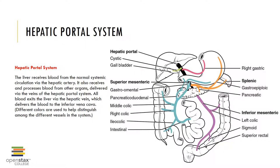Here you can see the hepatic portal system. The liver is responsible for filtering blood; it receives blood from the systemic circulation via the hepatic artery, and in addition processes blood via the hepatic portal system.